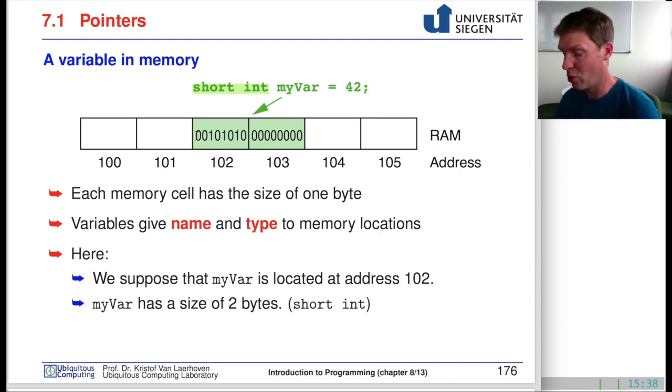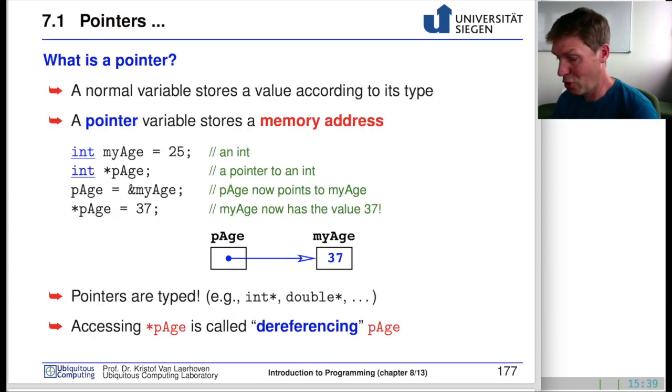It's going to be unsigned or signed, which has an effect on how these zeros and ones depict this 42. Suppose myVar is located at 102 and has a size of two bytes. If it was an integer, it would have spanned from 102 to 105 in memory.